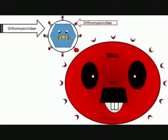Envelope viruses, orthomyxoviridae for instance, have protein spikes namely hemagglutinin (HA) and neuraminidase (NA). Hemagglutinin binds specifically to red blood cells, causing infection.